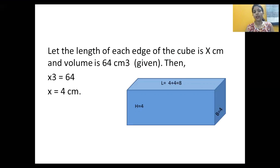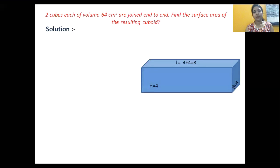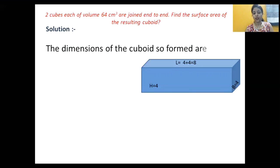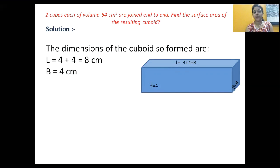Now let us write out the dimensions of the cuboid formed after joining the two cubes. The length l = 4 + 4 = 8 centimeters. Breadth b and height h remain the same, both equal to 4 centimeters.